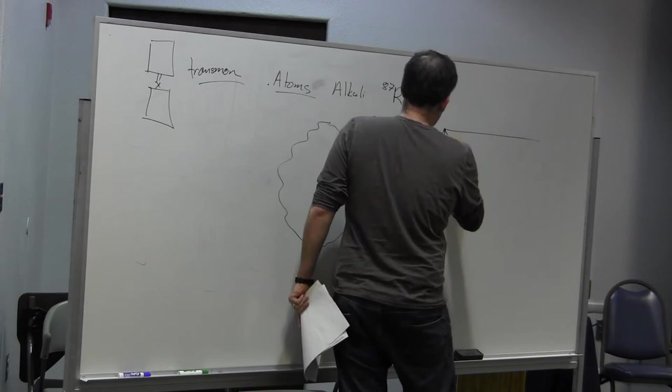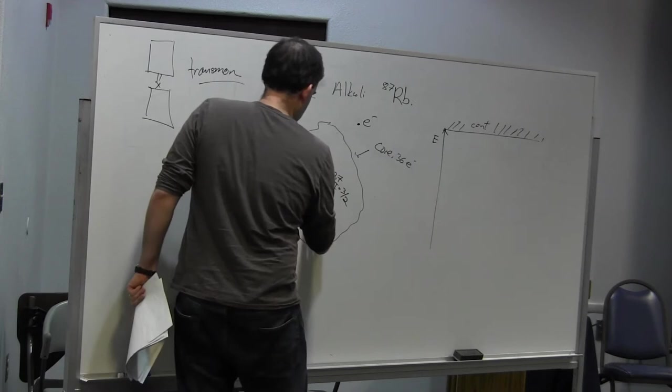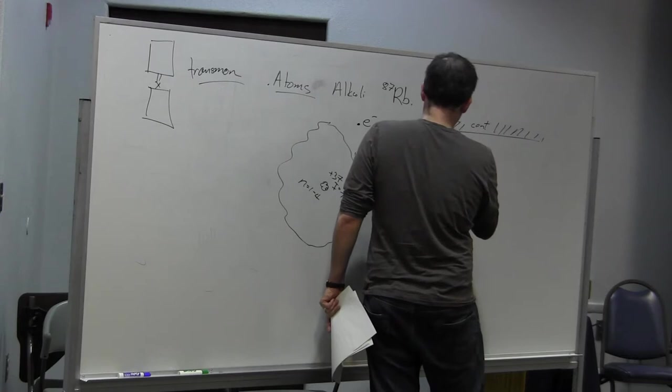Okay, so we recall the spectrum of hydrogen. Hydrogen has this n equals 1 level, 2, 3, 4, these are all filled. They're all filled. So the remaining electron, if it's going to live anywhere, it's going to live in the n equals 5 shell. So here's n equals 5, n equals 6, and so on.